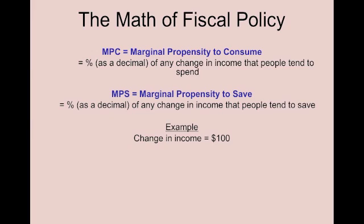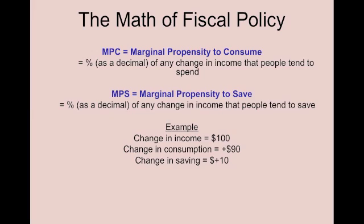Let's say that you got a change in your income of $100, and of that extra $100 you spend $90 of it and save $10. Then the marginal propensity to consume is 0.90 — that's 90% of that change in income — and the MPS is 0.10.